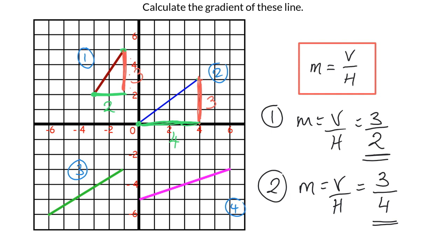For line three, the horizontal distance is five boxes and the vertical distance is three boxes. Once again we've got three as the vertical and five as the horizontal. So for line three, V over H gives us three over five.